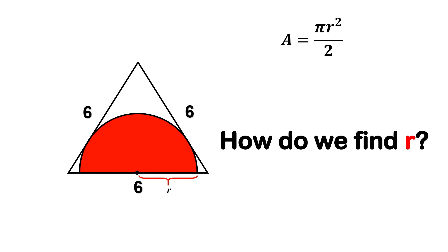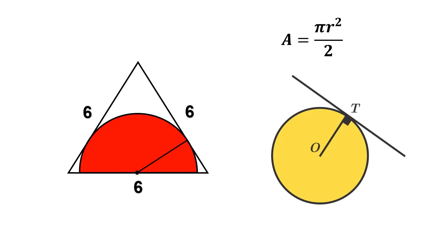How do we find r? Well, from the center of the semicircle, draw a radius to the point where the arc touches the side of the triangle. And as you know, whenever we connect the center of a circle to the point of tangency, that segment is a radius, and it's always perpendicular to the tangent line.